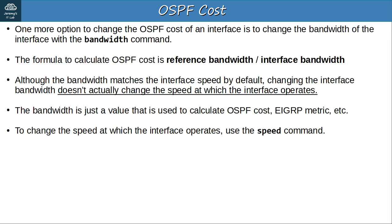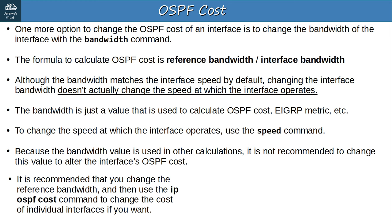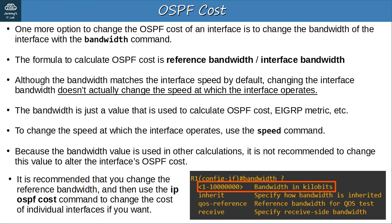Because the bandwidth value is used in other calculations, not just the OSPF cost, it is not recommended to change this value to alter the interface's OSPF cost. It is recommended that you change the reference bandwidth, and then use the IP OSPF COST command to change the cost of individual interfaces. If you do want to change the bandwidth of the interface, the command is BANDWIDTH followed by the bandwidth in kilobits per second, entered in interface config mode. Note this is different than the reference bandwidth, which is entered in megabits per second.